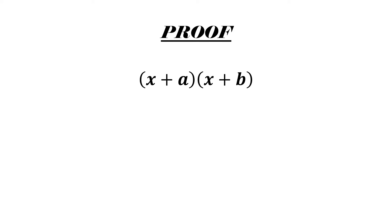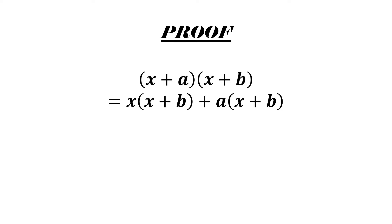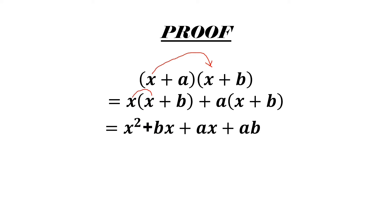We have x plus a into x plus b — these are two binomials to be multiplied. We follow the same process we use to multiply any two polynomials. The first term x is multiplied with the entire term x plus b: x into x gives x square, and x into b gives bx.